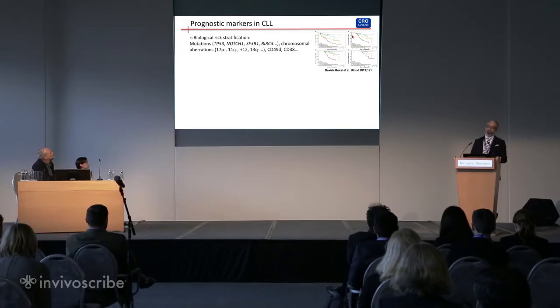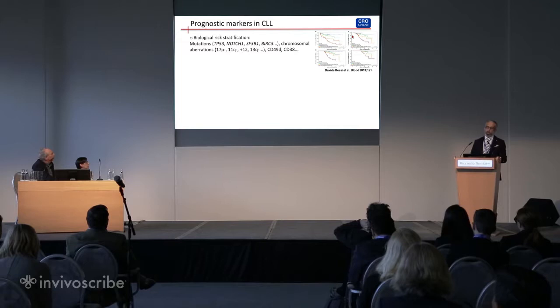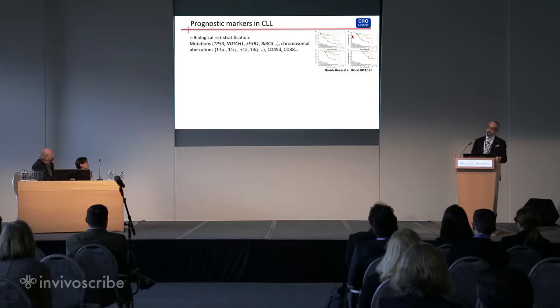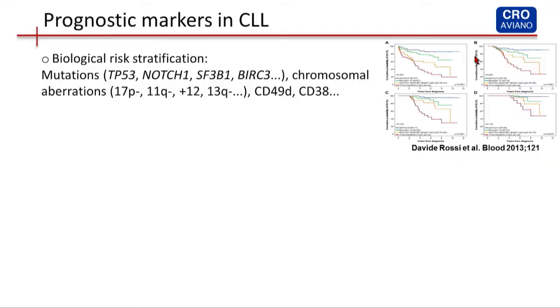I reported two examples of many prognostic markers in CLL: chromosomal aberrations like 7p- or 11q-, and the mutational status in particular genes such as TP53, Notch1, SF3B1, and BIRC3. Here on the side, you can see an example of how the integration of these two parameters could distinguish between different groups of patients with significant differences in overall survival.